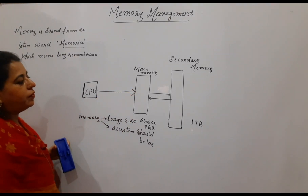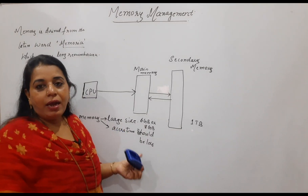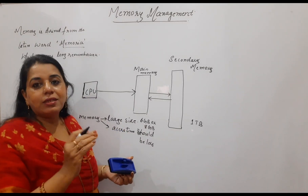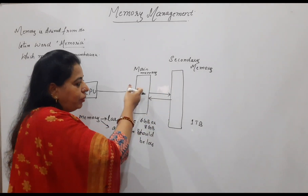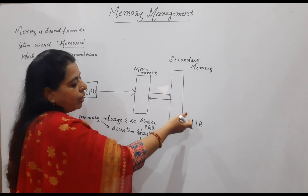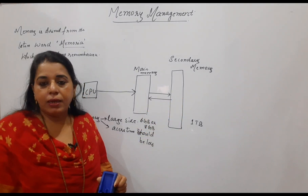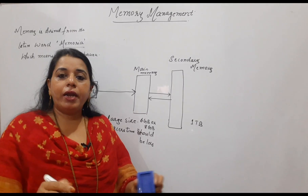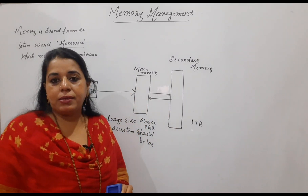So finally, the conclusion: we want a larger space and we want faster access. Both these things can be achieved with two different types of memories — the secondary memory and the main memory. Secondary memory has a very large space and can store any number of processes. When we want faster access, the main memory or physical memory will help because the CPU accesses the main memory directly.